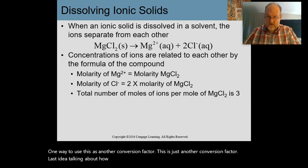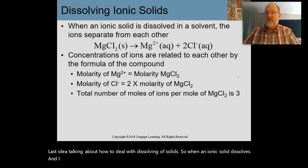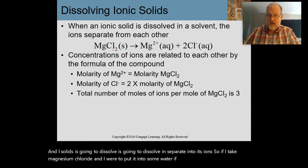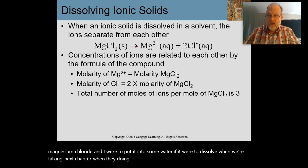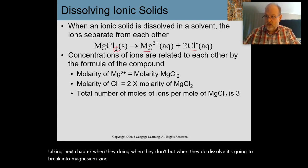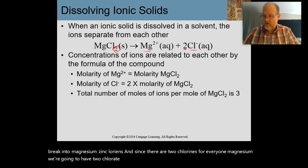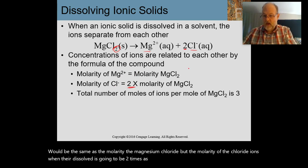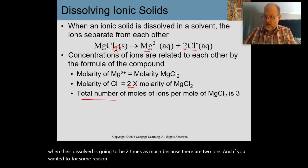When an ionic solid dissolves, it separates into its ions. For example, magnesium chloride (MgCl₂) dissolves into magnesium ions and chloride ions. Since there are two chlorides for every one magnesium, the molarity of chloride ions in solution is two times the molarity of the original MgCl₂. The molarity of magnesium equals that of MgCl₂, but chloride is twice that. If asked for the total ion concentration, it would be three times the original — two plus one.